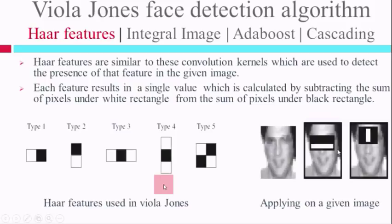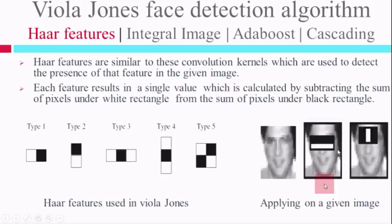Similarly, we have different kinds of features. Consider this feature: I apply it to the image, and it is similar to the previous feature but varies in size and position. When I apply it on an image, it sums up all the pixel values under the black rectangle — all plus one — and sums up all the pixel values under the white rectangle. The sum of the white region is subtracted from the black region, and the single value we get is the output.